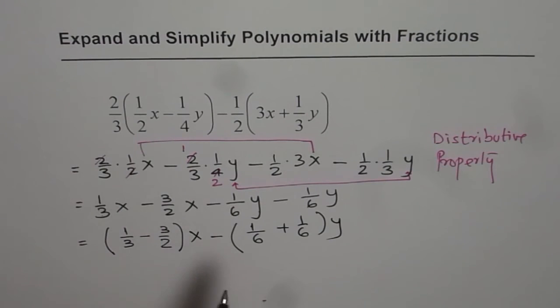Now in this case when you have to add, you have to make common denominators. Denominator common should be 6, so it becomes 2 minus 9, right.